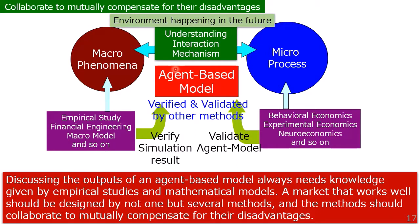An agent-based model has the advantage of understanding interaction mechanisms and environments not yet happening. But a microprocess modelled by an agent-based model should be validated by other methods — for example, behavioural economics, experimental economics, and so on. And the output of the agent-based model — macrophenomena — should be verified by other approaches such as empirical study and financial engineering. So discussing the output of an agent-based model always needs knowledge from empirical study and mathematical models. A market that works well should be designed by not one but several methods, and the methods should collaborate to mutually compensate for their disadvantages.